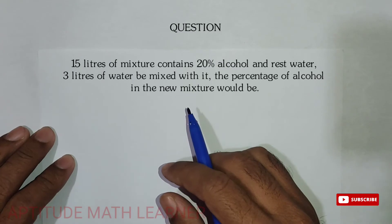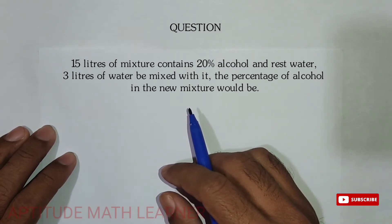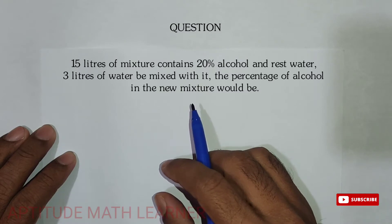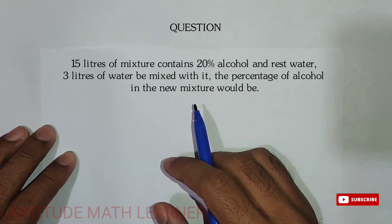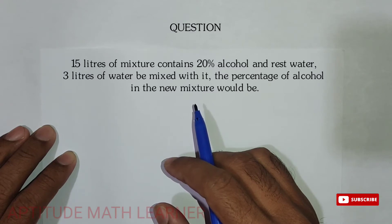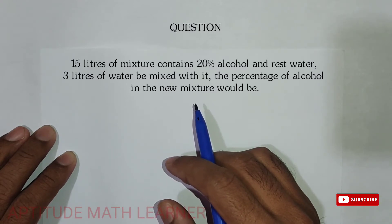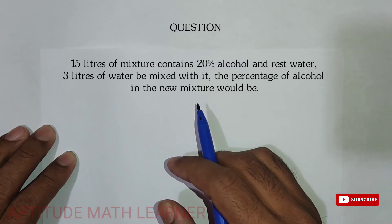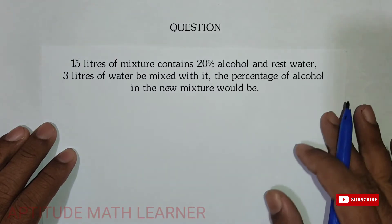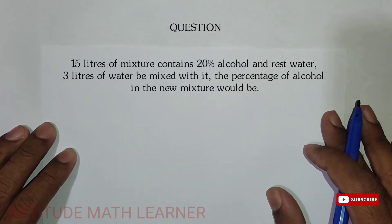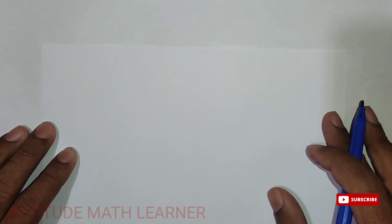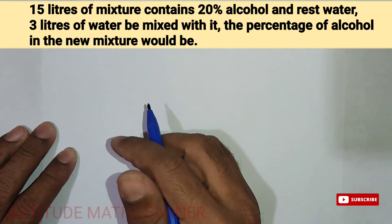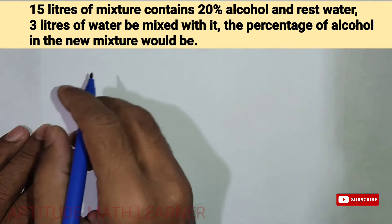Hello and hi to our YouTube channel Aptitude Math Learner. Today we are having the question: 15 liters of mixture contains 20 percent alcohol and the rest water. If three liters of water be mixed in it, the percentage of alcohol in the new mixture will be? So in the mixture of 15 liters, the percentage of alcohol is 20 percent, and we add three liters more water — what will be the percentage of alcohol?